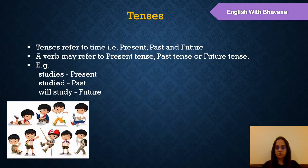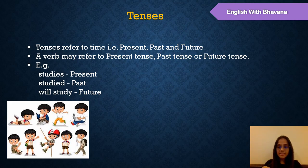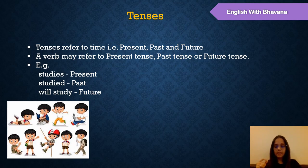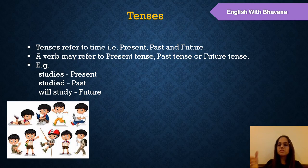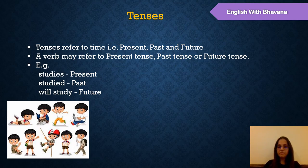What are tenses? What is the word meaning of tenses? The word meaning of tenses is time. When you are talking about present, that is also time. Future is also time and past is also time. So tenses refers to time — that is present, past, and future.